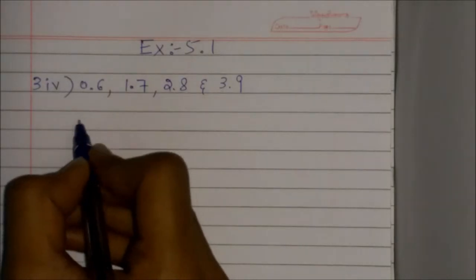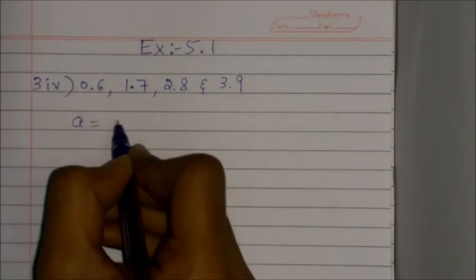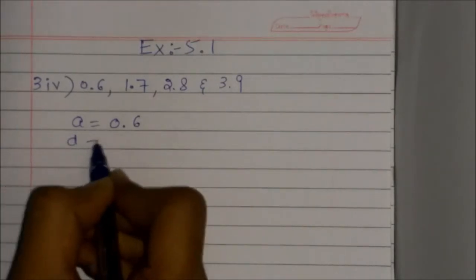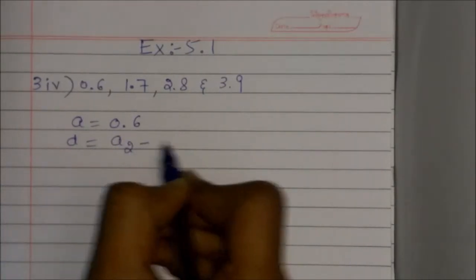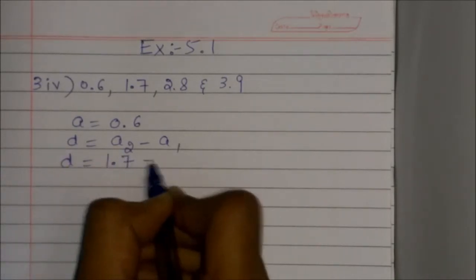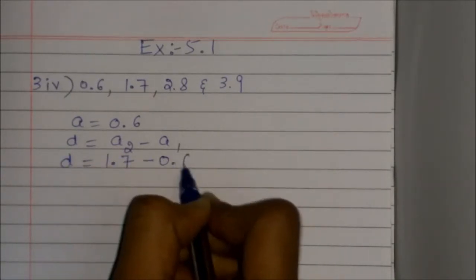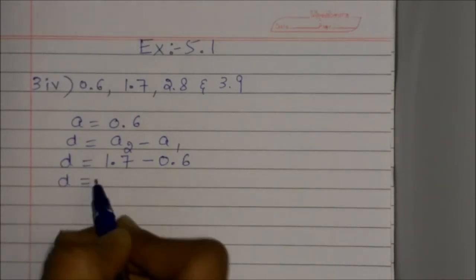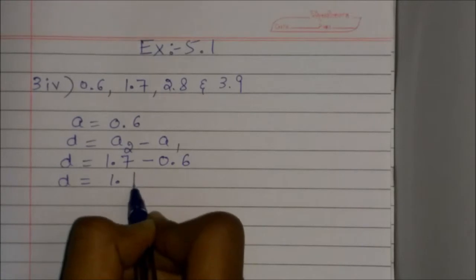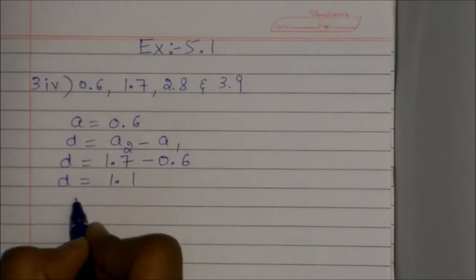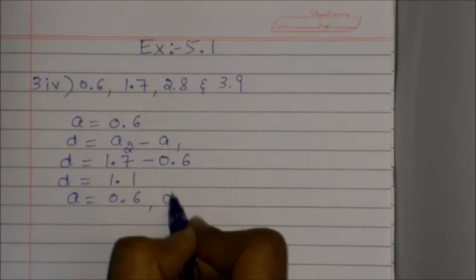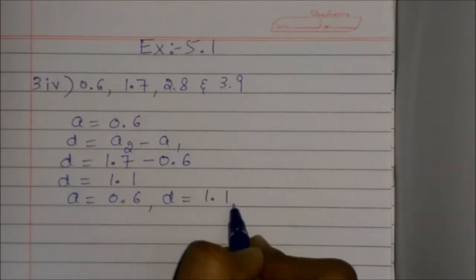Here the first term is 0.6. So, a is equal to 0.6 and d is given by the formula a2 minus a1. d is equal to 1.7 minus 0.6, that is d is equal to 1.1. So here the first term is 0.6 and common difference is 1.1.